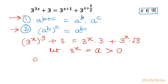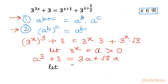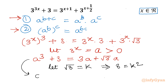So I will write: a³ + 3 = 3a + √3·a. Now I can consider a second substitution. Let √3 = k, so 3 = k². Our equation transforms into: a³ + k² = k²·a + k·a.